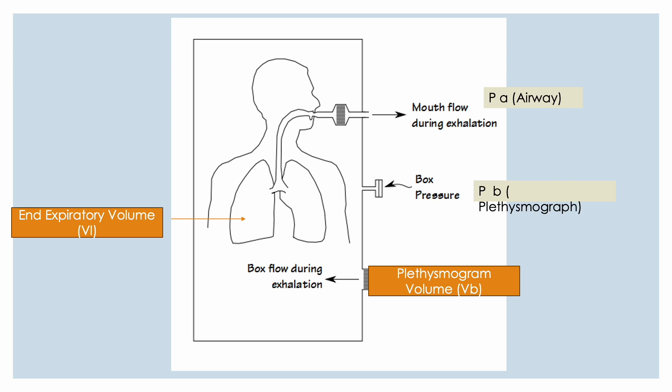But once he sits, before that the machine is prepped, calibrated - the temperature, transient temperature differences, the thermal drift, they are all corrected. And then he starts breathing quietly until an end expiratory level is achieved. So when does that happen? Usually after three to ten tidal breaths.